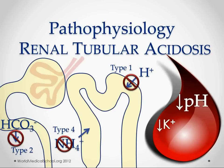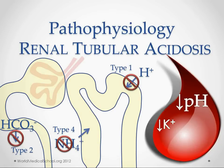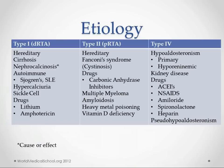One more note: type 1 and type 2 renal tubular acidosis are associated with low potassium — hypokalemia. We just need to remember throughout this whole discussion that type 1 and type 2 are going to be a problem with keeping enough potassium in the blood.